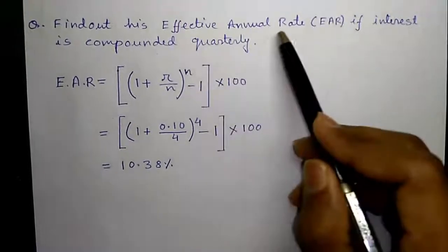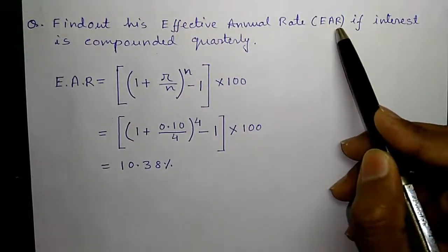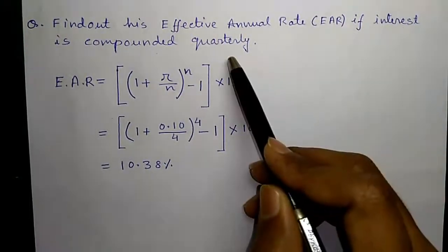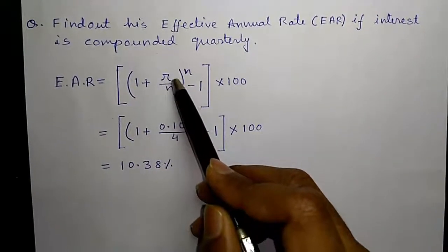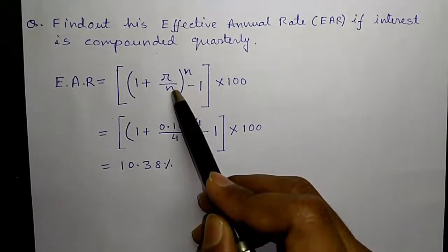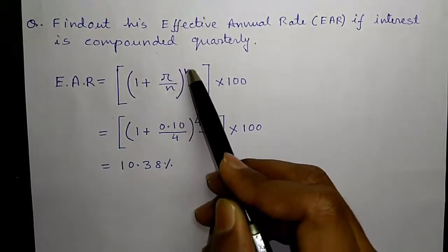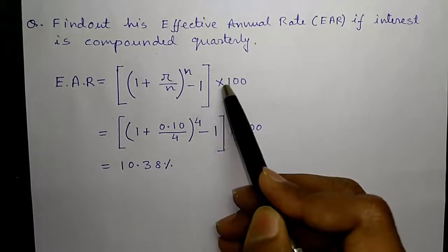Question 2. Find out his effective annual rate or EAR if the interest is compounded quarterly. EAR is given by 1 plus R or the interest rate divided by N or the compounding frequency to the power N minus 1 into 100.